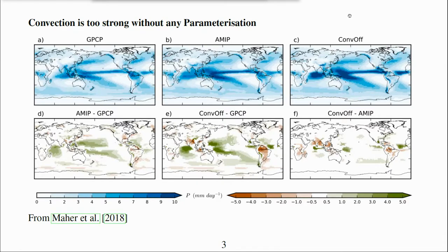This shows that the mean precipitation is more accurate with a convection parameterisation than without, and that the convection is too strong without a parameterisation.